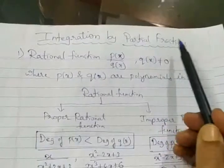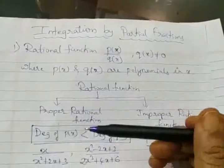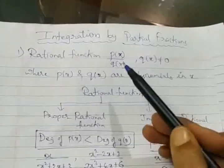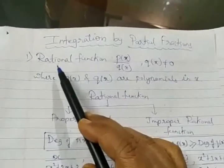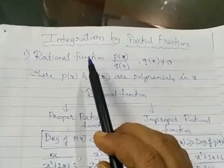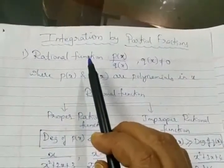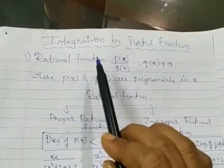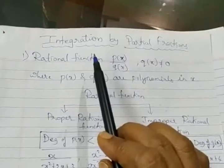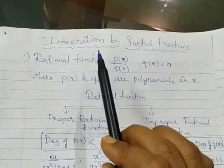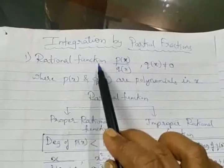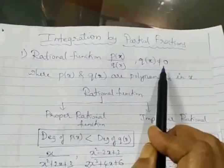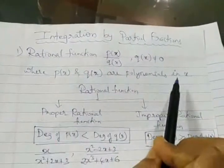Regarding partial fractions, the last video also I gave a simple example. It is nothing but a polynomial function - they are nothing but proper fractions or improper fractions. First I will analyze what you mean by rational function. So rational function - this definition you have come across in PUC first year. A function in the form of p(x) upon q(x), where q(x) is not equal to zero, and both p and q are polynomials in x, is called a rational function.